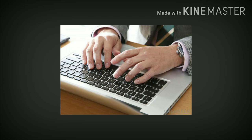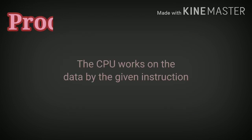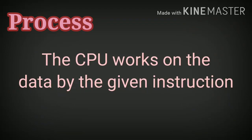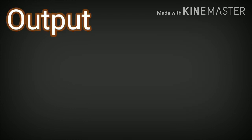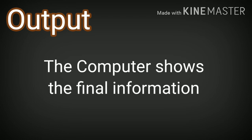Friends, what is process? The CPU works on the data by the given instruction — that is called process. The process takes place inside the CPU. What is output? The final information the computer shows is called output.